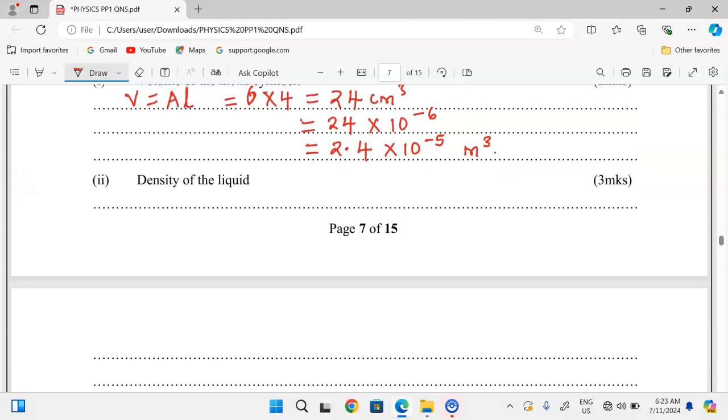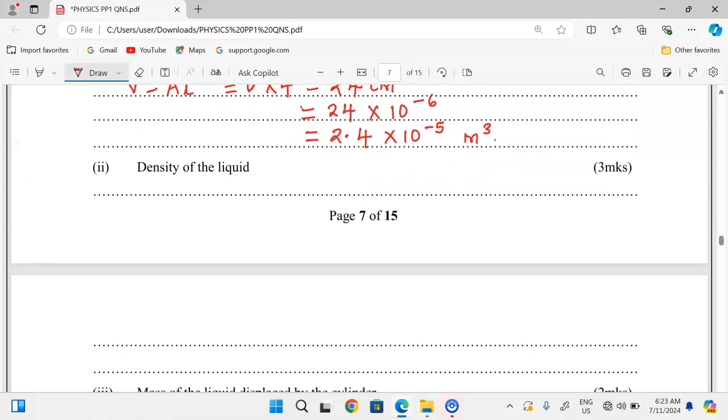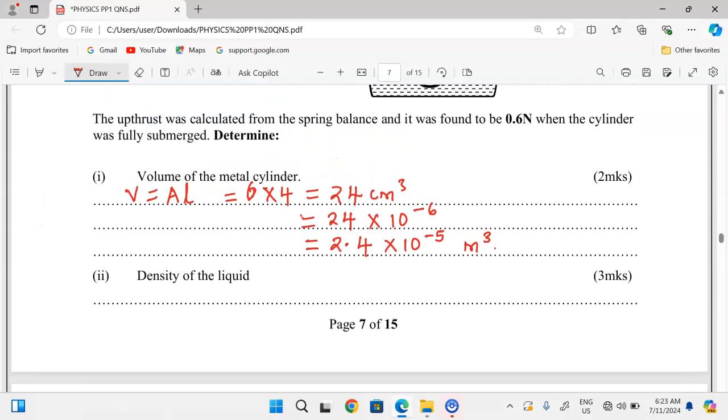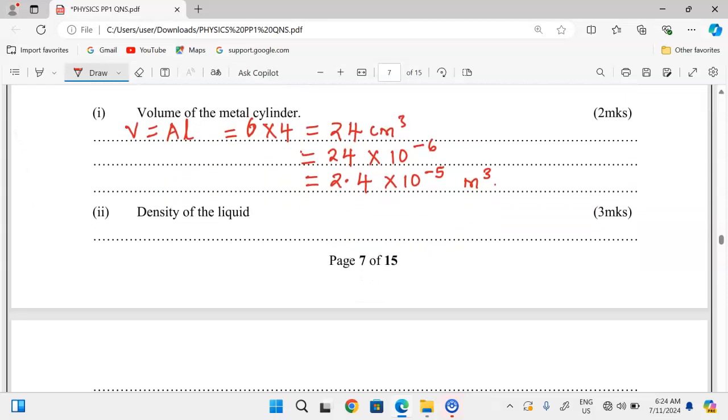There is part two of the same. We are still determining the density of the liquid. Something we are supposed to understand is that when an object is submerged in a fluid, it displaces a volume of the fluid which is equal to the volume of the solid being submerged. And so being given or having calculated the volume of the metal cylinder, then volume of the liquid displaced is also the same as the volume of the metal cylinder.